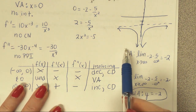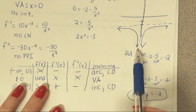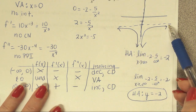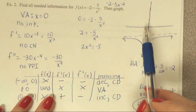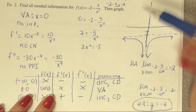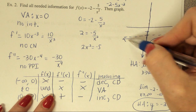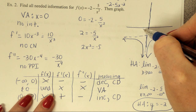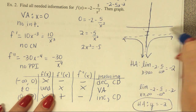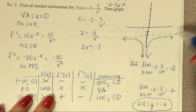The graph looks like this: decreasing and concave down on the left of x equals zero, and increasing and concave down on the right. Plus, think about it — there are no x intercepts, so we know the function couldn't cross the x-axis. There are lots of reasons for it to look this way.